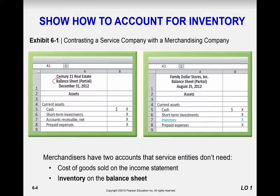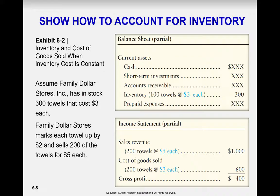Inventory accounts are on the balance sheet. For the service company there is no inventory, because you can't really inventory people. For the merchandising company we do see inventory on the balance sheet. Items are recorded at historical cost, and you'll learn that lower of cost or market is how we value inventory. If the cost is three dollars and the market is four, we value it at three — that's the conservatism principle.